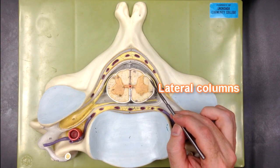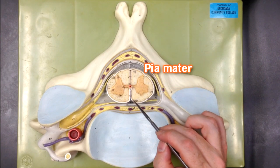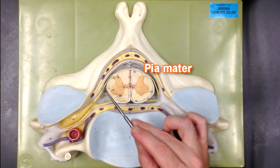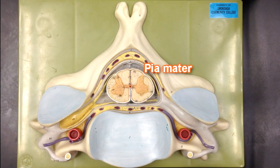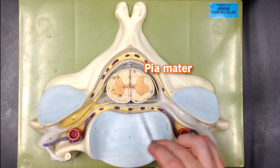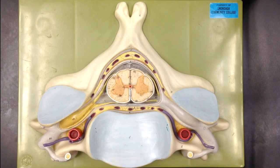This white layer right here is the pia mater. The pia mater is like skin for the spinal cord, and it's continuous with the pia mater in the brain as well.